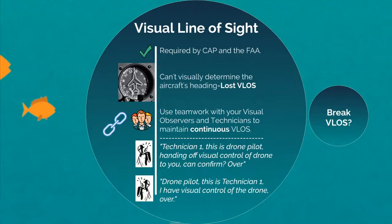You've lost VLOS if anyone in visual control of the drone can no longer determine its heading. VLOS is required by CAP and the FAA unless you have waivers in place, and NHQ will advise you if there are any waivers. Teamwork is your best bet to overcoming VLOS restrictions — make a chain of technicians and visual observers extending out as far as you need, then hand off visual control to each one in turn so you continuously maintain VLOS. A mock script for handoff of visual control is included.